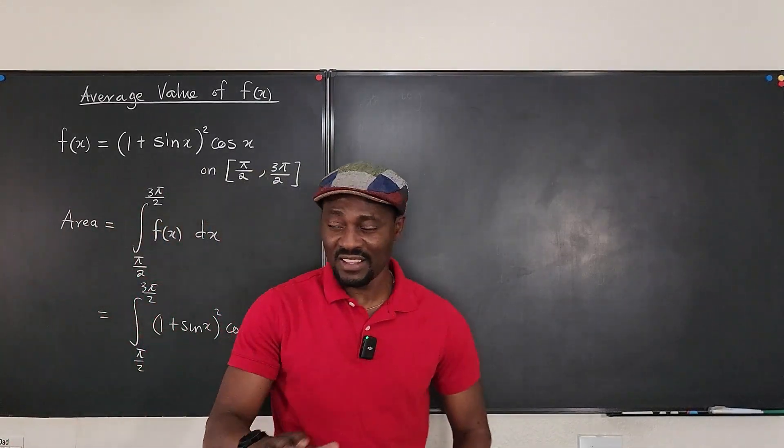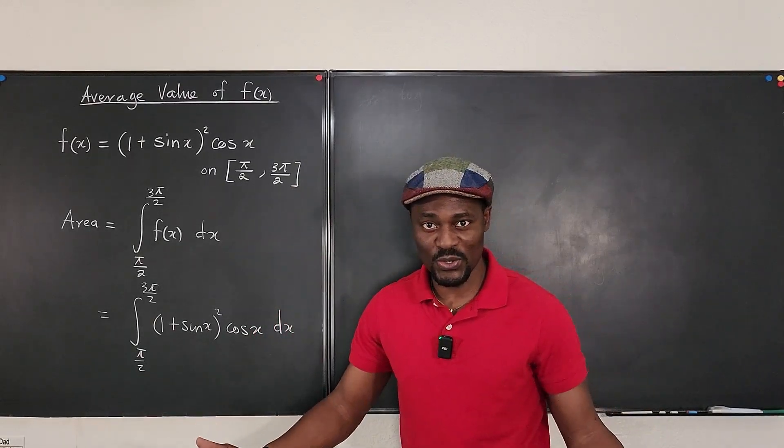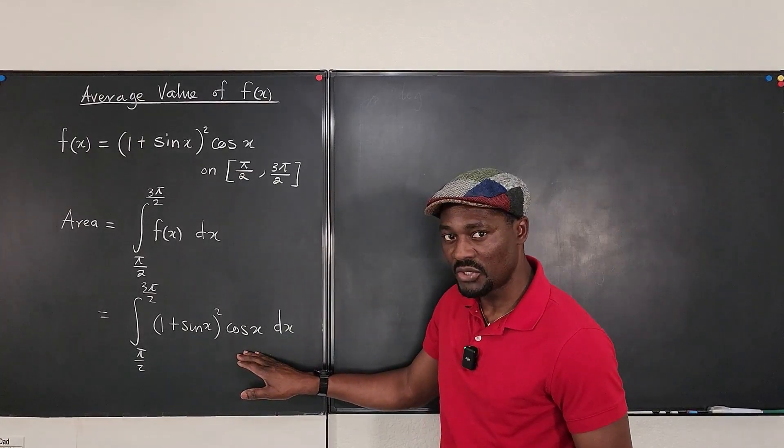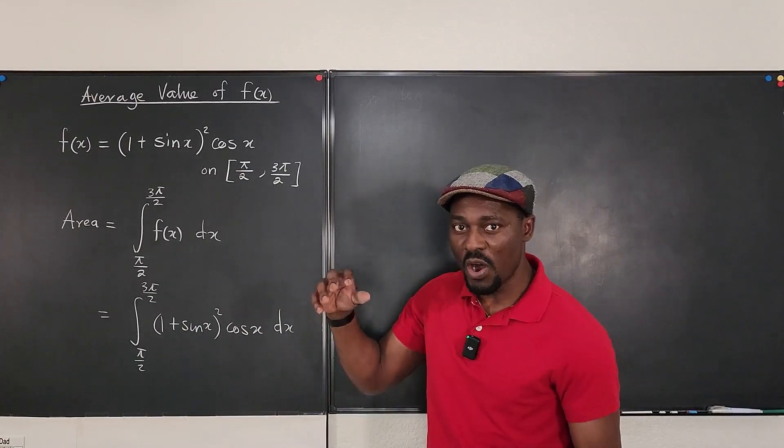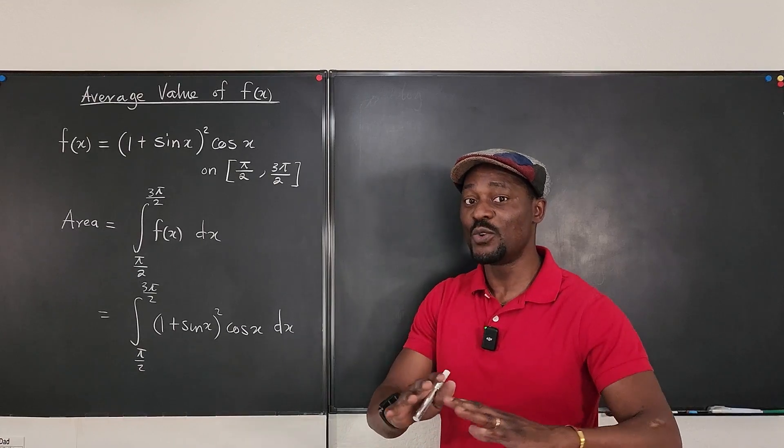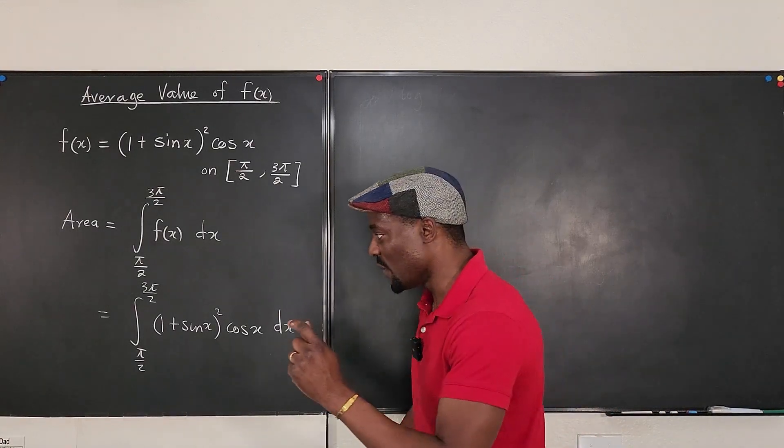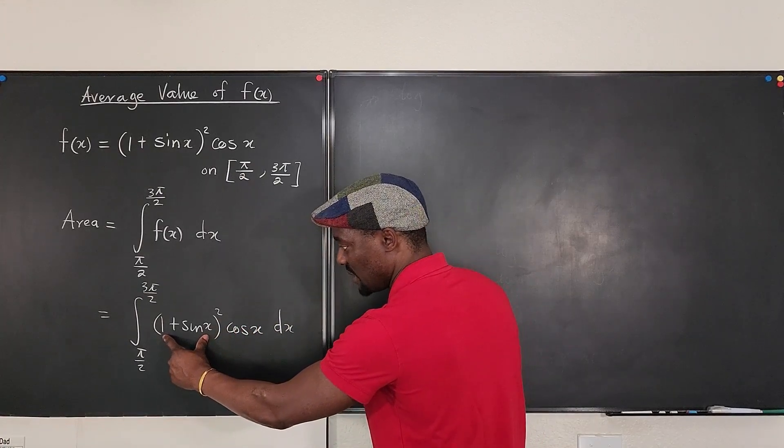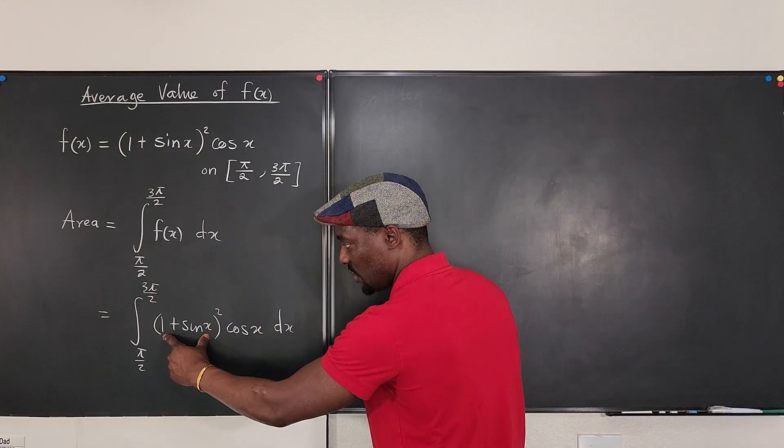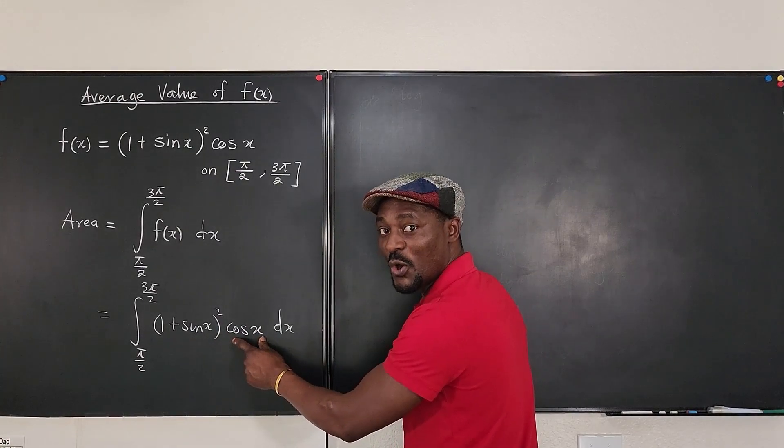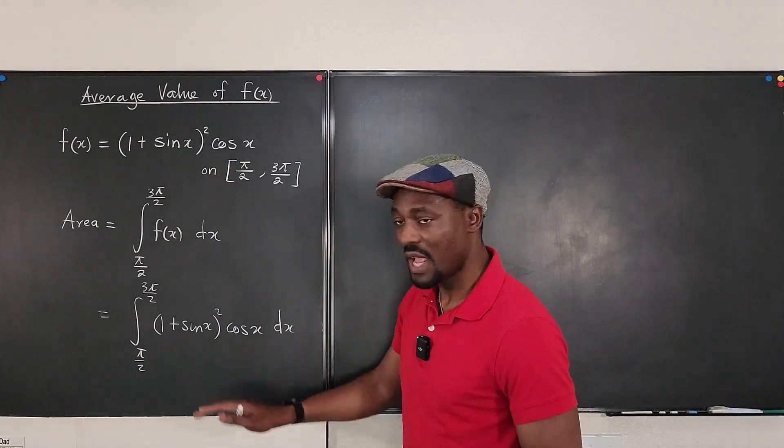And in taking this integral, you have to recall all your integration techniques that if you notice you're multiplying two functions, and the derivative of one of them is the other, then you're good. Use u substitution. So I know that if I differentiate this argument here, it's going to be just cosine x. And cosine x is sitting here, right? So, you use u substitution.